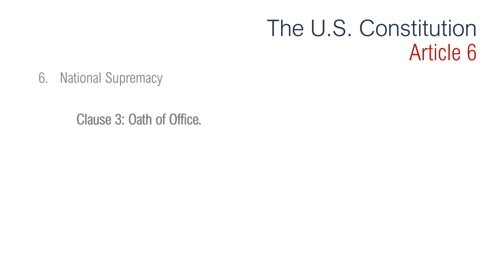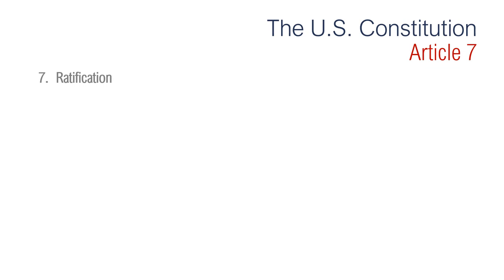Article 6, Clause 3 is regarding the oath of office. It says every federal and state official must take an oath of office promising to support the U.S. Constitution, and religion may not be used as a qualification to serve in any federal office. Finally, we have Article 7 — ratification. It says the ratification of the conventions of nine states shall be sufficient for the establishment of this Constitution. This means that nine states were required to ratify the Constitution. Delaware was the first and New Hampshire the ninth.